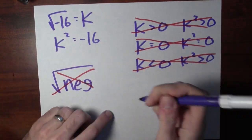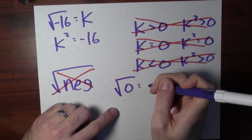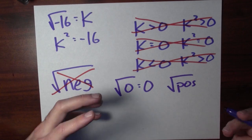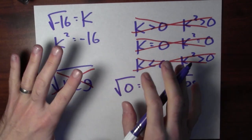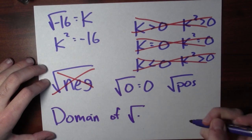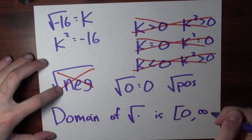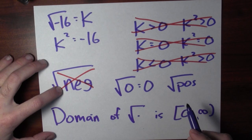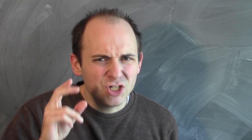In contrast, it does make sense to talk about the square root of zero, which is just zero. And it also makes sense to talk about the square root of positive numbers. So to summarize the situation, the domain of the square root function is all the numbers between zero and infinity, including zero — so I'm using the square bracket — but of course not including infinity, because infinity is not a number. Sometimes you're asked to calculate the domain of a function that's more complicated than just the square root of x. Let's see an example of that.